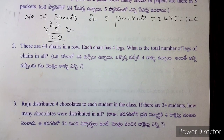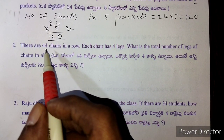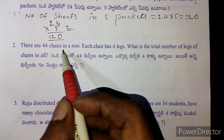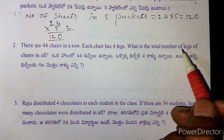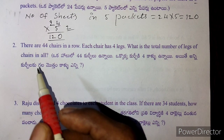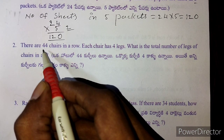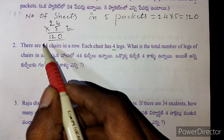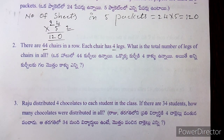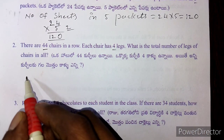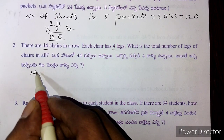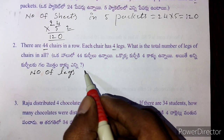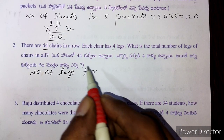Next, there are 44 chairs in a row. Each chair has 4 legs. What is the total number of legs of chairs in all? This is the total number of legs for 44 chairs.